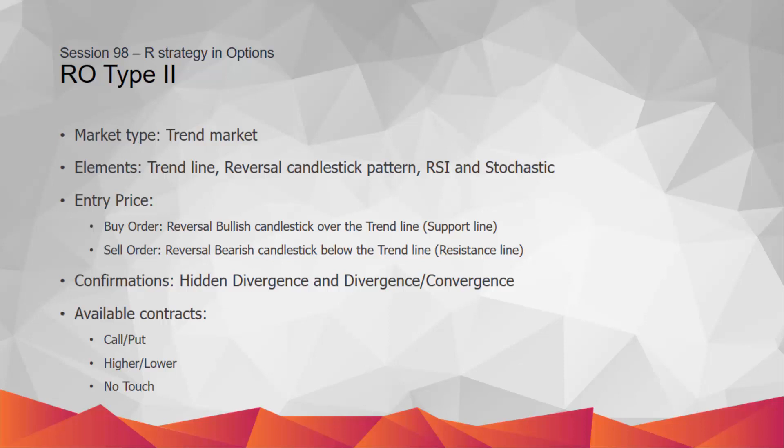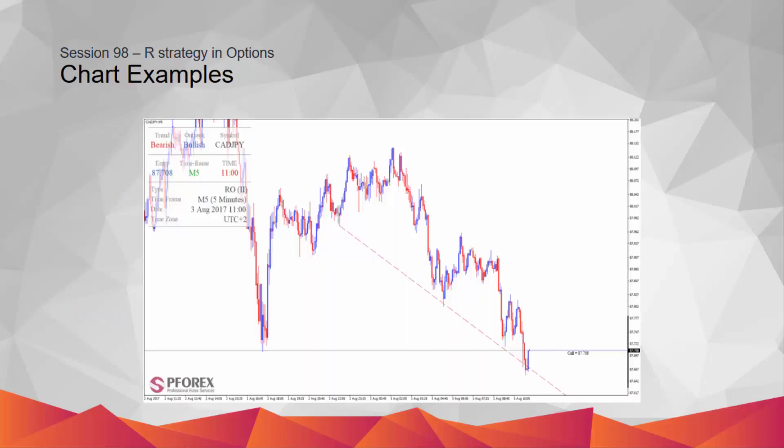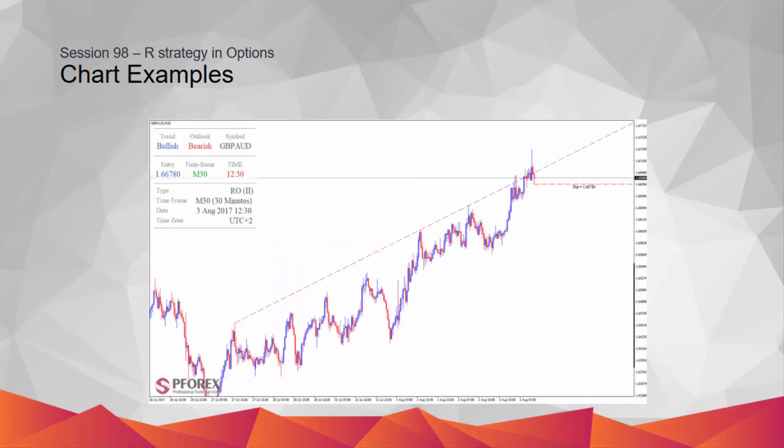Now let's check some examples of Type 2 strategy. On the CAD/JPY price chart, the trend line connects at least three valleys with support effect on price movement. After price crossed the trend line, the closing price of the bearish candlestick pattern formed lower than the resistance line. A powerful bullish candlestick pattern formed to confirm the bullish trend. In the next example, the trend line as resistance line has connected four peaks. A long bullish candlestick pattern crossed the trend line with the closing price over it. A powerful bearish candlestick pattern just formed after that, with closing price below the trend line to confirm the reversal downward spot.